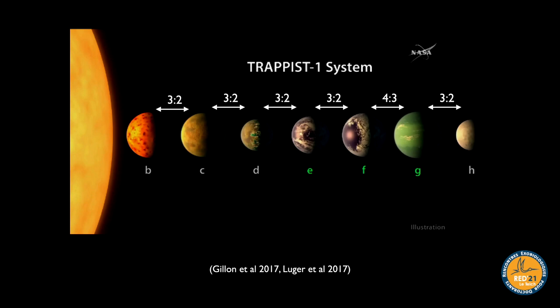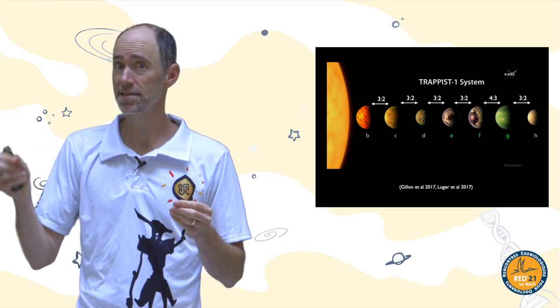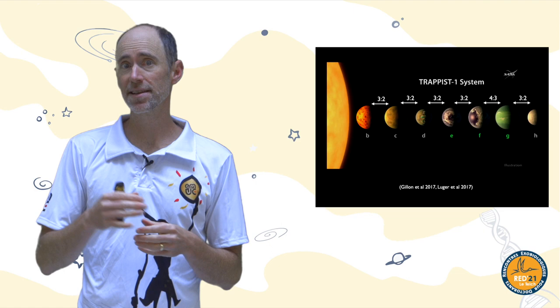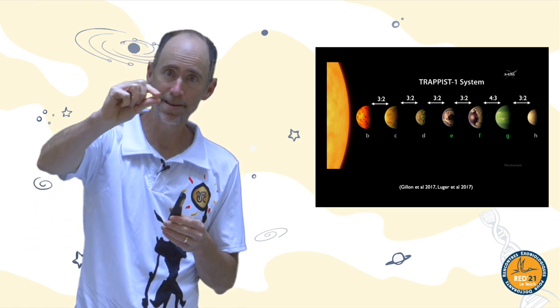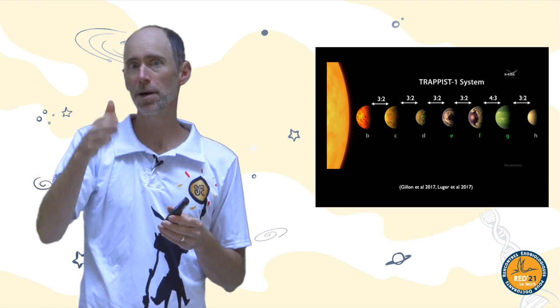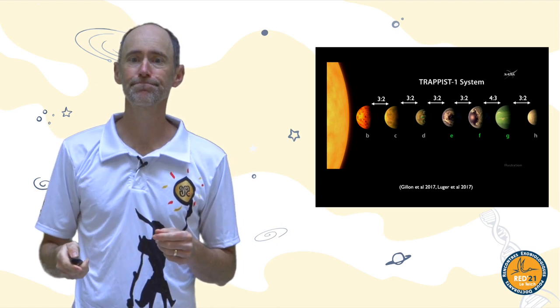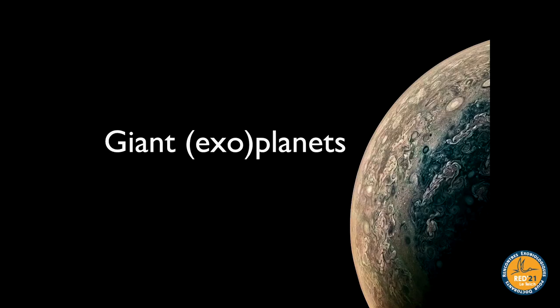Looking at the period ratio distribution again: the red curve shows resonant chain systems that form while gas is present, and the blue curve is what happens after the gas goes away and the chains break. Mixing them together matches the observed gray curve. Statistically, about 95 to 99 percent of systems must go unstable after gas removal to match the observations. A few systems survive with intact resonant chains — the coolest example is TRAPPIST-1, with seven roughly Earth-sized planets, three in the habitable zone, all seen in transit.